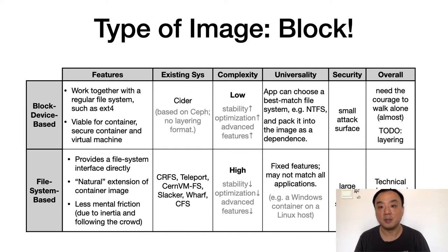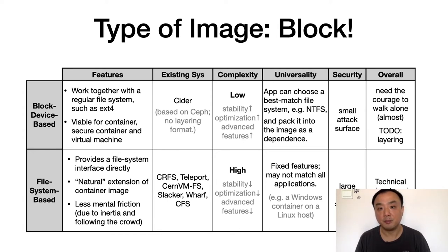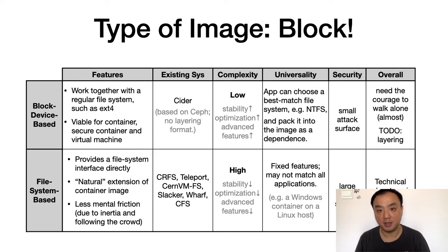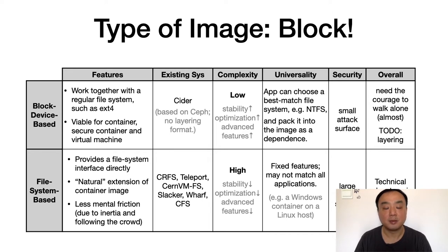A block device based remote image, on the other hand, is much simpler, so it is easier to get stable, easier to apply optimizations, and easier to develop advanced features. A block image is more universal because it allows the application to choose the best fit file system. For example, a Windows container running on a Linux host may want to choose NTFS as its image file system, which is most likely feasible with block image. A block image has a smaller attack surface, so it is easier to get secured. According to this analysis, we've been focusing on block device, and although we are working almost alone, we believe this is the best approach for container systems.